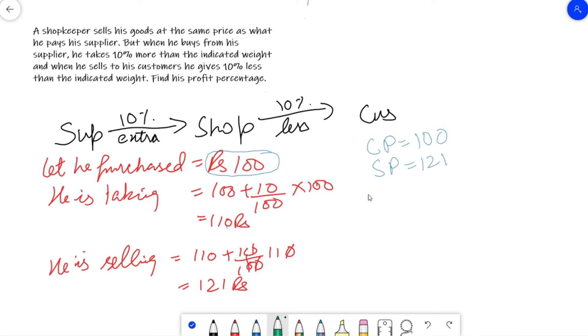Now let's take profit. Profit is selling price minus cost price. How much is it? 121 rupees. Now let's take profit percentage. Profit upon CP into 100.